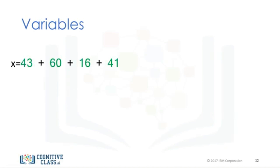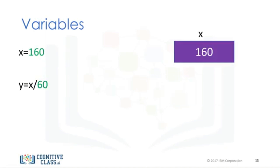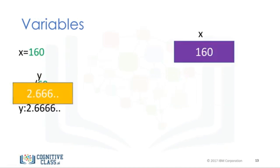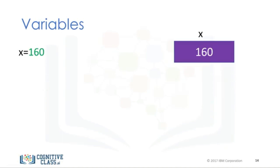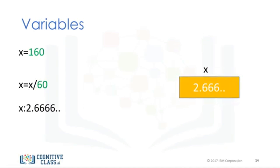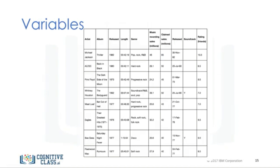We can store the results of expressions. For example, we add several values and assign the result to x. X now stores the result. We can also perform operations on x and save the result to a new variable y. Y now has a value of 2.666. We can also perform operations on x and assign the value back to x. The variable x now has a value of 2.666. As before, the old value of x is not important. We can use the type command on variables as well. It's good practice to use meaningful variable names.